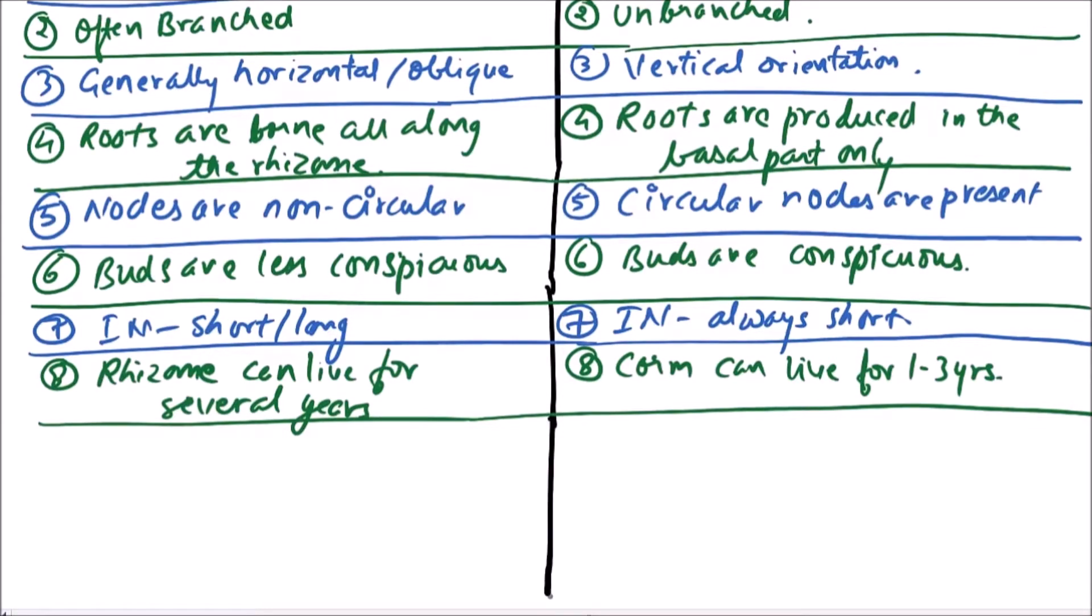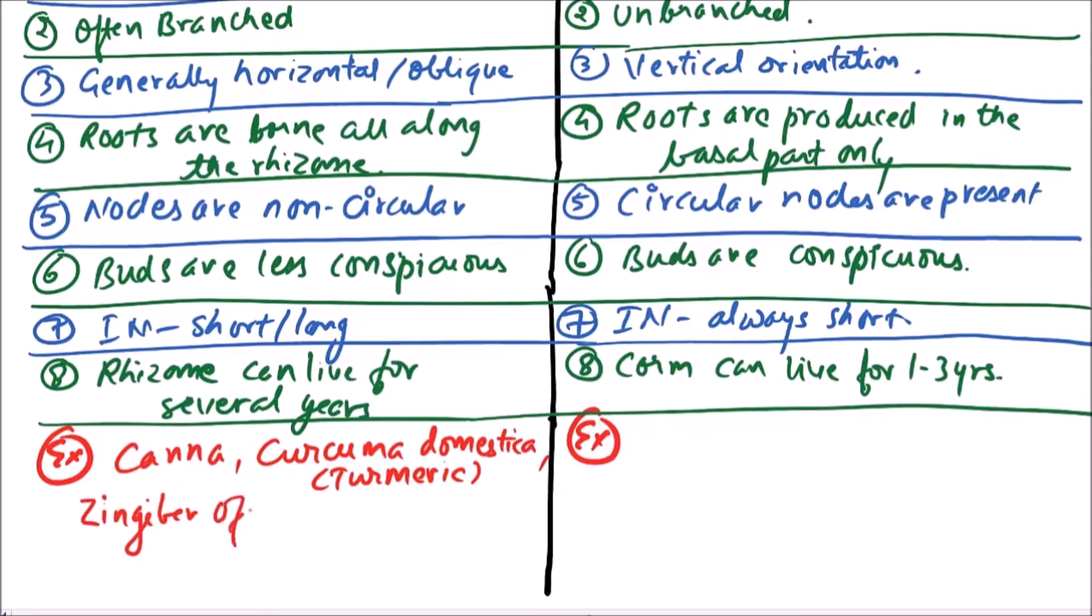Now the examples include rhizome canna, Curcuma domestica, which is also known as turmeric, and Zingiber officinale, which is ginger, and Gloriosa.